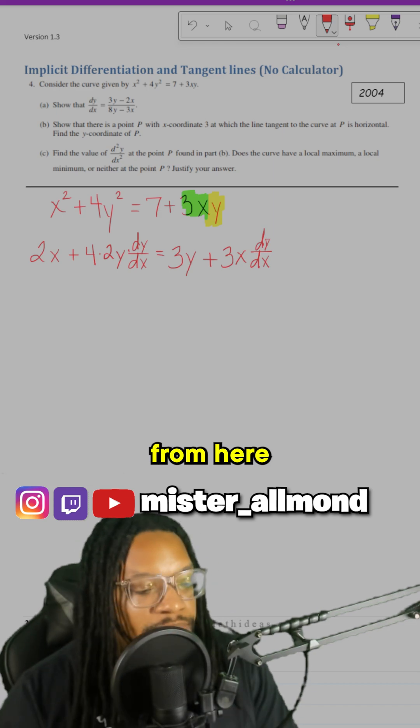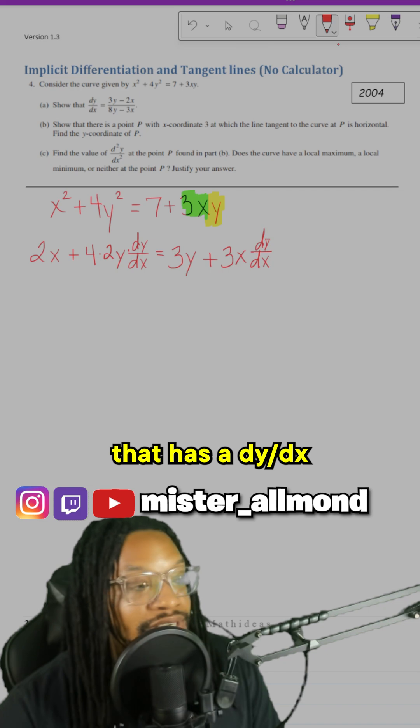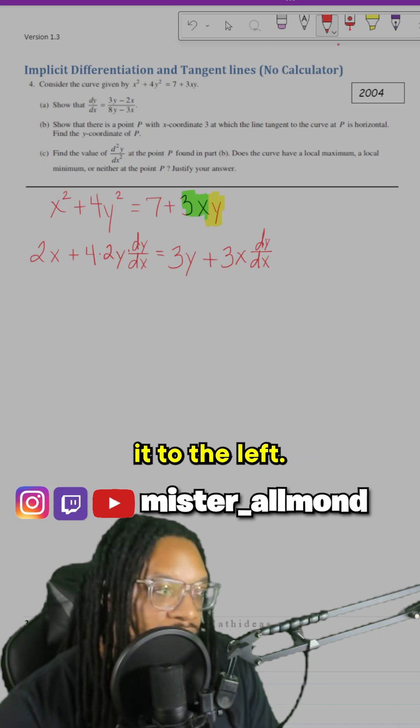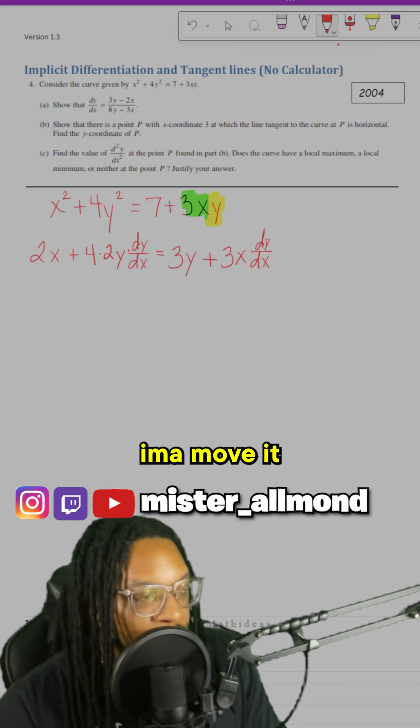All we have left from here is 100% algebra. Just get dy/dx by itself. That's it. Any term that has a dy/dx in it, I'm going to move it to the left. Any term that doesn't have dy/dx, I'm going to move it to the right.